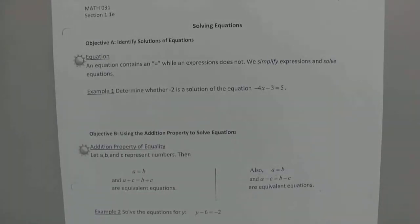1.1e is the last co-requisite topic before we do section 1.1 in college algebra. The first thing we're going to do is identify solutions to equations. So before we even solve them, we're going to remind ourselves how do we check.